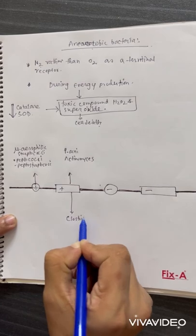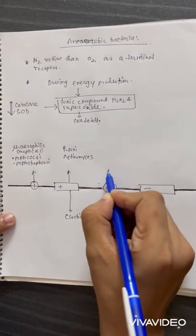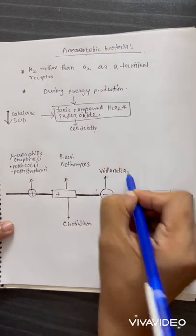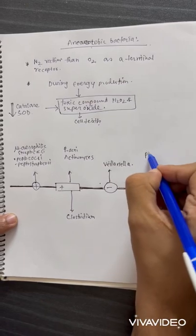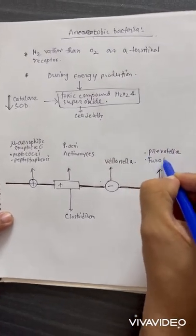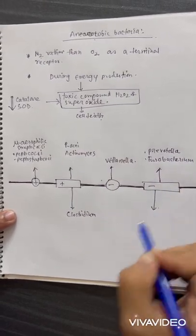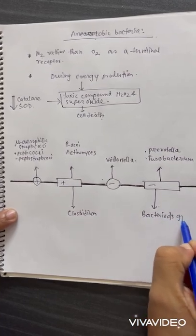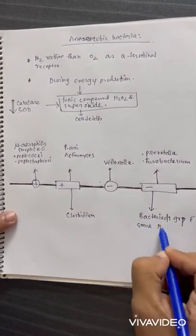Below the diaphragm for gram positive bacilli is Clostridium. The gram negative cocci is Veillonella. The gram negative bacilli above the diaphragm are Prevotella and Fusobacterium, and below the diaphragm is the Bacteroides group, including Bacteroides fragilis.